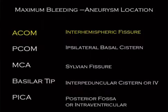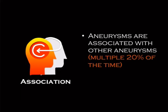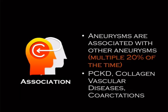Aneurysms are associated with other aneurysms — about 20% of the time they're multiple. There are associated syndromes: polycystic kidney disease, collagen vascular diseases like Marfan's and Ehlers-Danlos, and aortic coarctation also has an increased incidence of berry aneurysms.